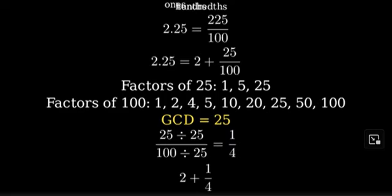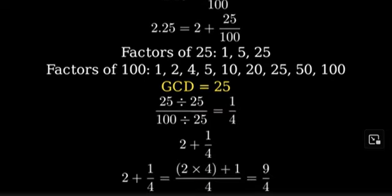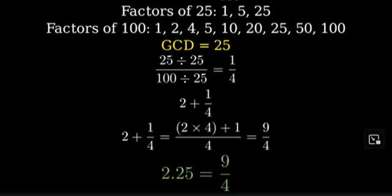Finally, let's convert this mixed number to an improper fraction. To do this, we multiply 2 by 4, which is 8, and add 1, which gives us 9. The denominator stays the same. So, our final answer is 9 fourths.